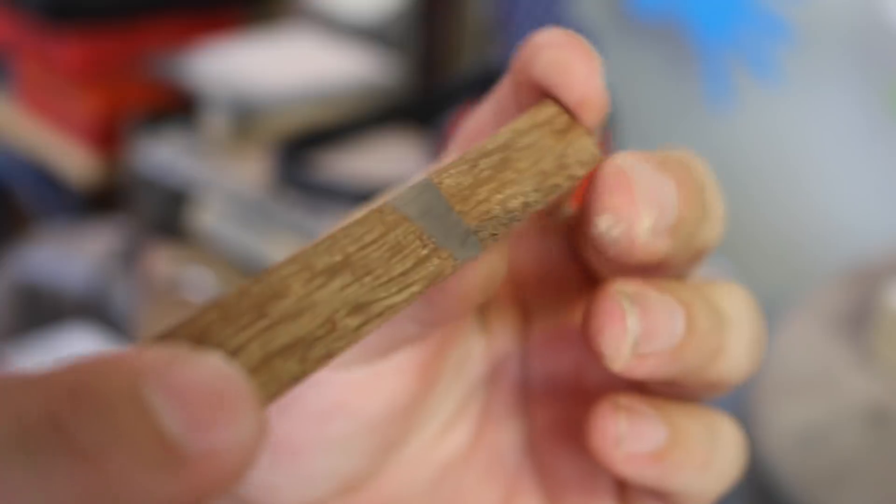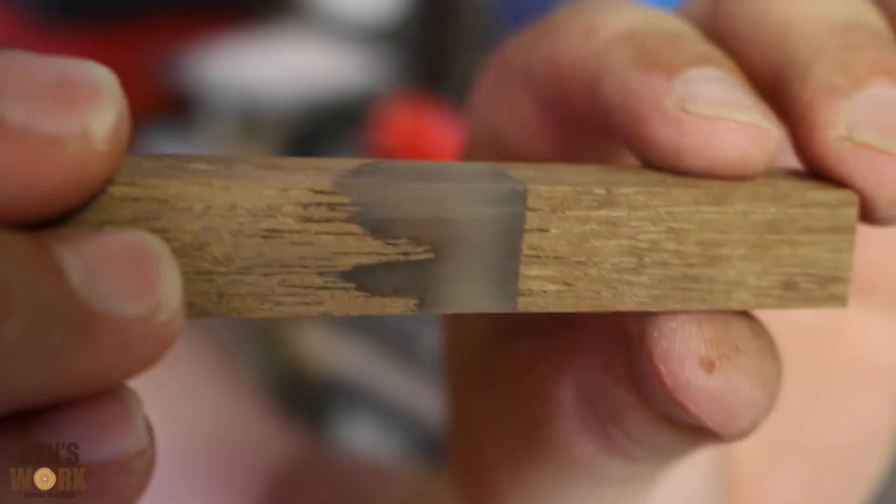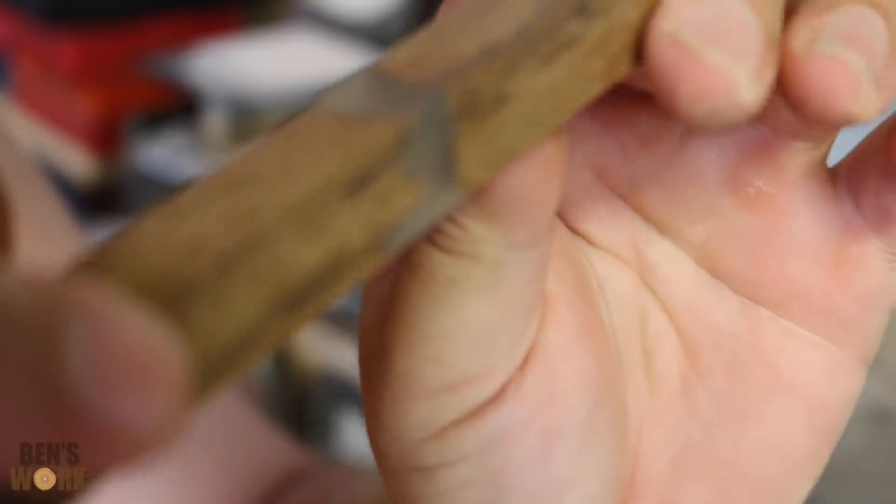So now I've finished sanding it and I've got it to the shape that I want, which is a nice square shape with these nice sharp edges on it. So now I'm going to go to some hand sanding and get it shined up really nice.